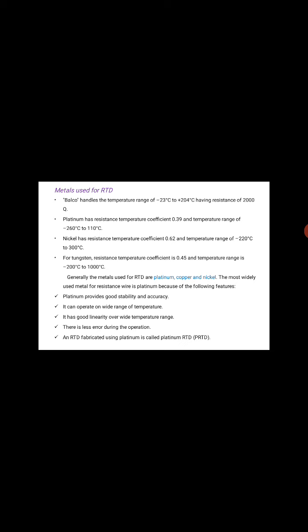Generally, the metals used for RTD are platinum, copper, and nickel. The most widely used metal for resistance wire is platinum because of its following features: it provides good stability and accuracy, it can operate over a wide range of temperature, it has good linearity over the wide temperature range, and there is less error during operation. RTD fabricated using platinum is called a Platinum RTD, that is PRTD.